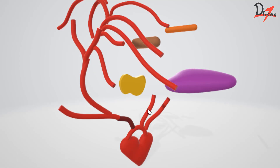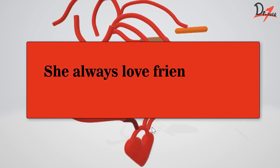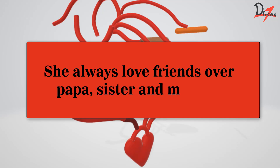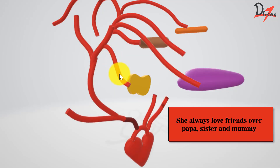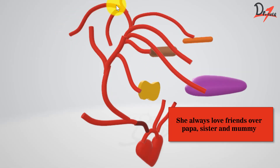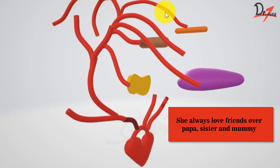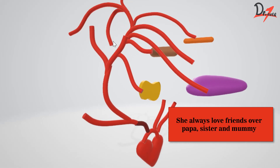If you just want to remember the branches, another mnemonic is: 'She always loves friends over papa, sister, and mummy.' She — superior thyroid; always — ascending pharyngeal artery; loves — lingual artery; friends — facial artery; over — occipital artery; papa — posterior auricular artery; sister — superficial temporal artery; and mummy — maxillary artery.